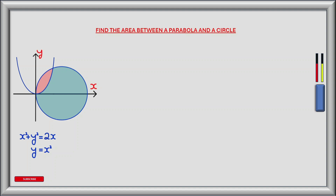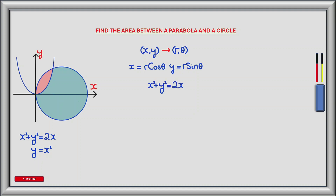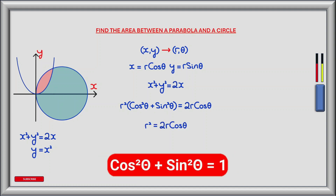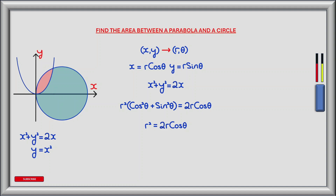The first step in finding the area is to convert the equations of the circle and the parabola from Cartesian coordinates to polar coordinates. To do this we'll substitute r cos theta for x and r sin theta for y. The circle in Cartesian coordinates is x squared plus y squared equals 2x. Making the substitution for x and y we have r squared times (cos squared theta plus sin squared theta) equals 2r cos theta. Using the trig identity where cos squared theta plus sin squared theta equals 1, we're left with r squared equals 2r cos theta. Dividing both sides by r gives r equals 2 cos theta.